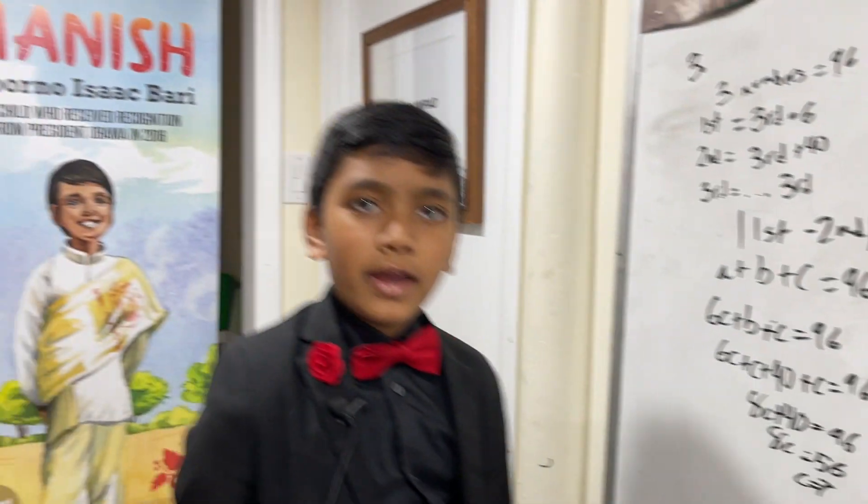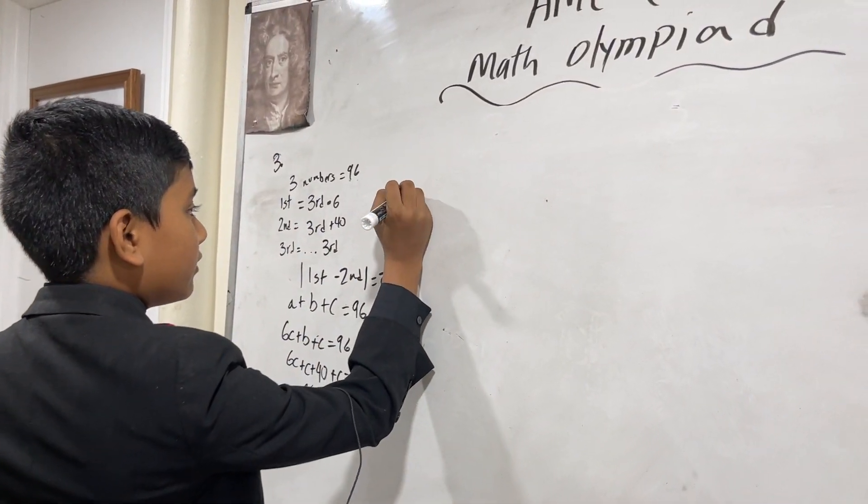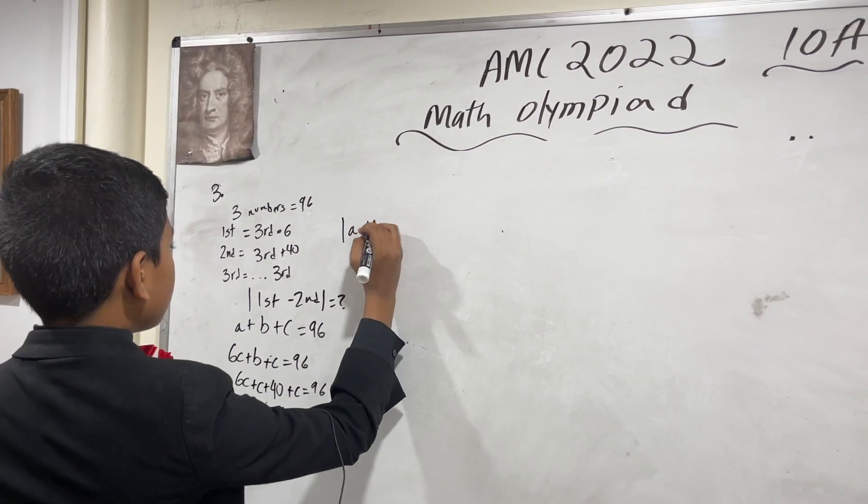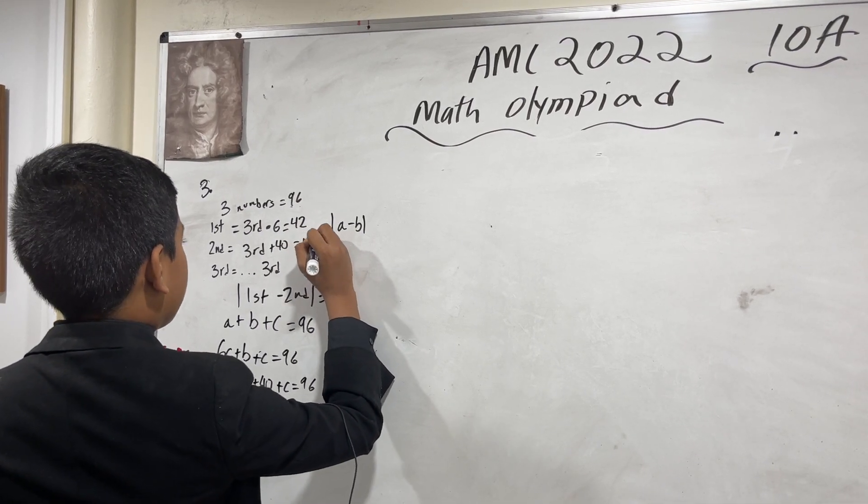But wait, the problem's not over yet. You have to find the actual value of the difference between a and b. So the first is the third times six, which is 42. The second is the third plus 40, which is 47.